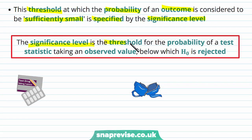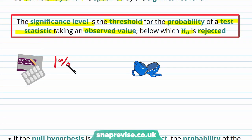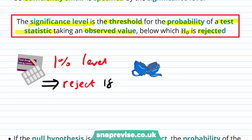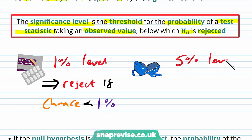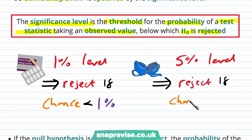The significance level is the threshold for the probability of a test statistic taking an observed value, below which H0 is rejected. For example, we could have the 1% significance level and we reject the null hypothesis if the probability is less than 1%. Or we could have the 5% significance level, and in this case we would reject if the probability is less than 5%. We usually write the significance level as a percentage, and it is normally given to us in a question.